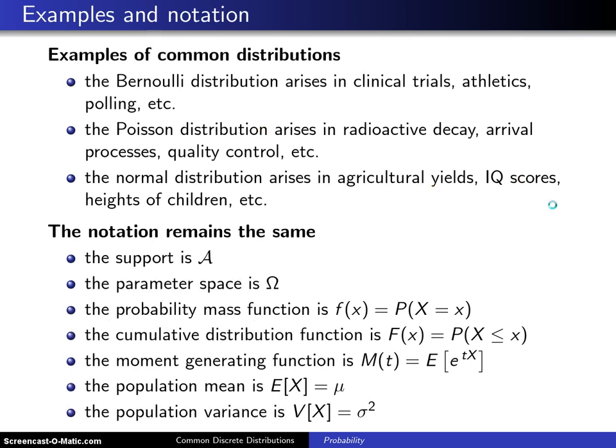The good news is that a lot of the notation is going to remain the same. I'm going to give you two examples that happen to be discrete, namely the Bernoulli and the Poisson, and then one example which is continuous, which is the normal. Here are some examples of where they show up.